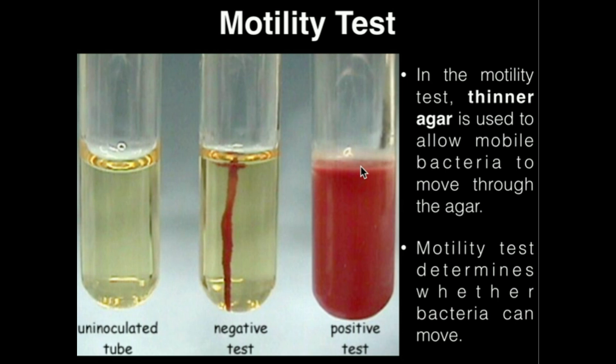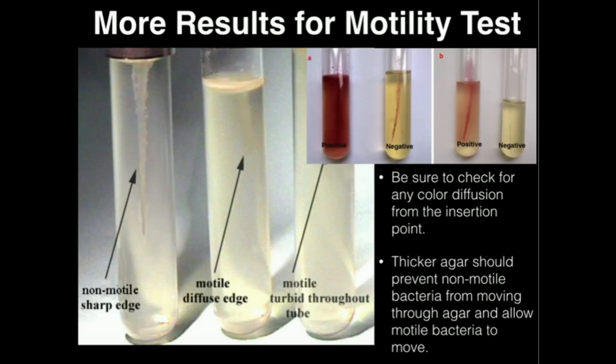The reason we have this red color throughout the tube is because the bacteria propagated — they were motile, so they moved throughout the tube. This agar also contains TTC, so the bacteria everywhere in the tube were able to use TTC as an electron acceptor, giving it electrons, causing it to turn red. That's the basis behind the motility test.